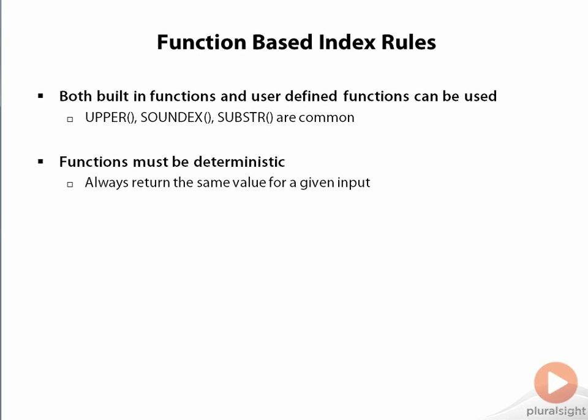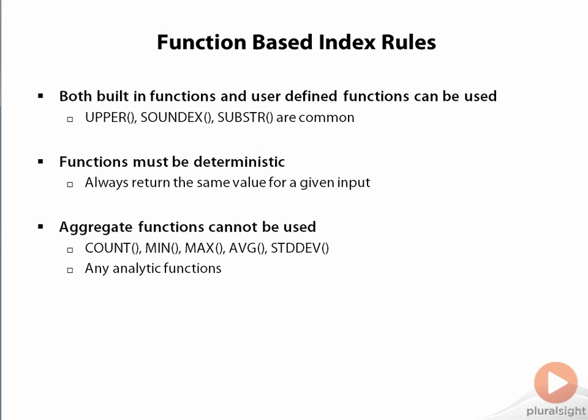Once again, it is the computed value from the function that is stored in the index. So if this value would change over time for any reason, then the index wouldn't work. Finally, you cannot use any aggregate functions to build a function-based index. These operate over multiple rows, not just one row, so they aren't allowed.